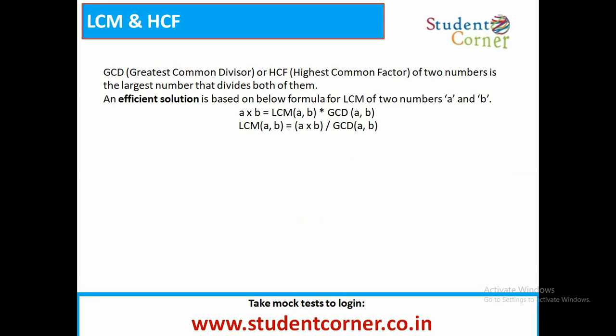Now, LCM and HCF. HCF or GCD, greatest common divisor. LCM, least common divisor. These are the two things. If you take two numbers, the product of two numbers is equal to LCM into GCD. Using this formula, we need to find LCM and HCF.